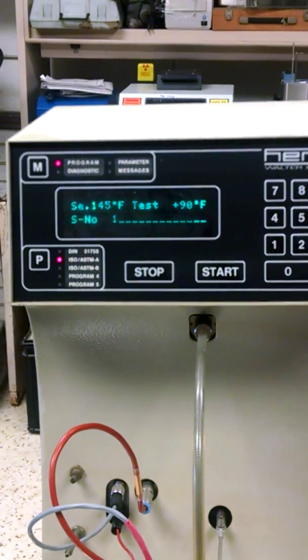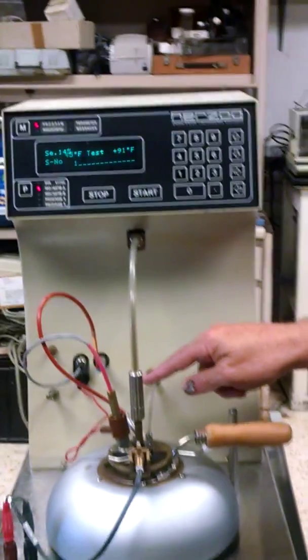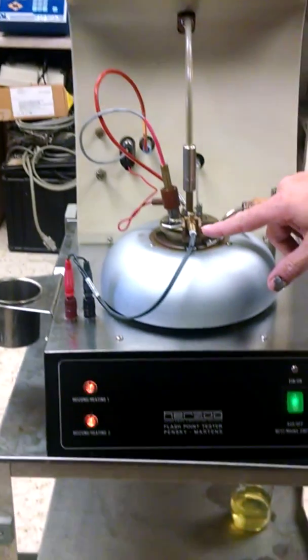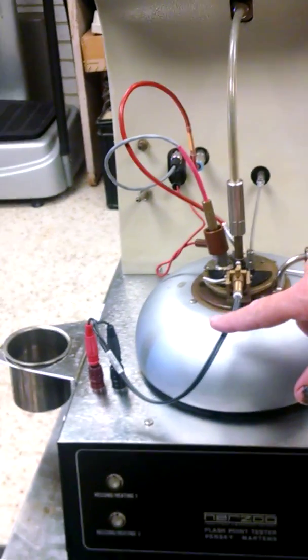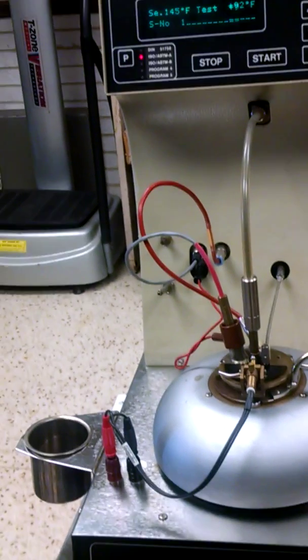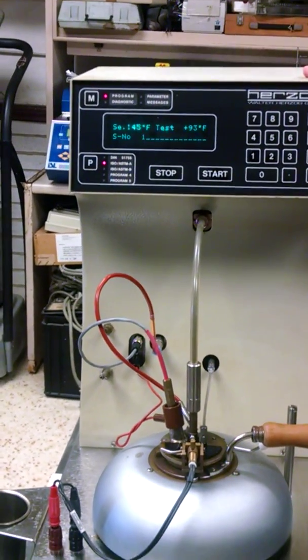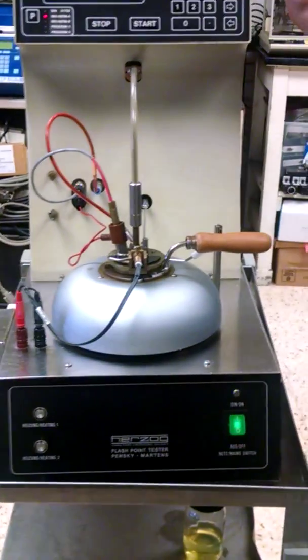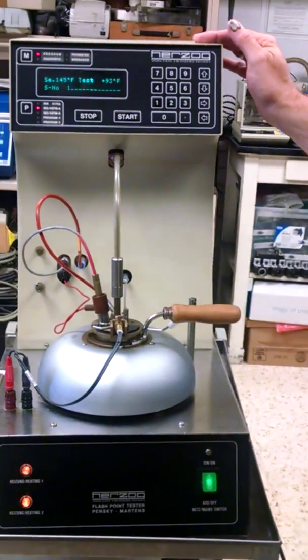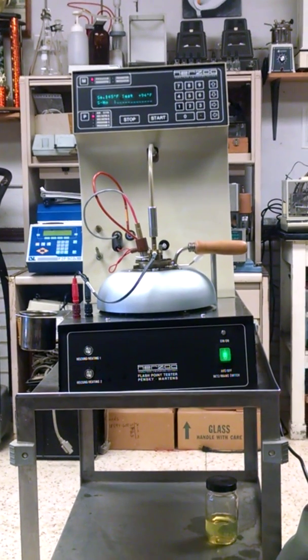And the thing about this machine is we also have parts. We have extra arms, we have extra flash mechanisms, we have extra cups, we have extra electronics. So even though this is an older machine, you can come to us for parts. If you buy it, it breaks down, we can either fix it or we can supply you the parts so that you can fix it.